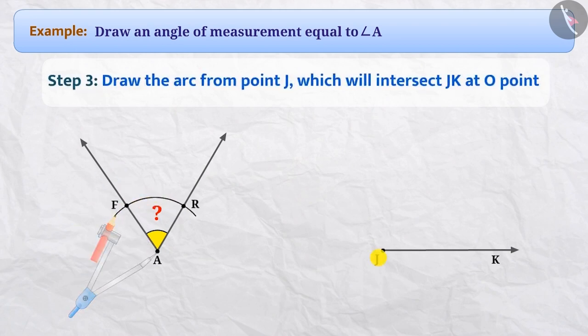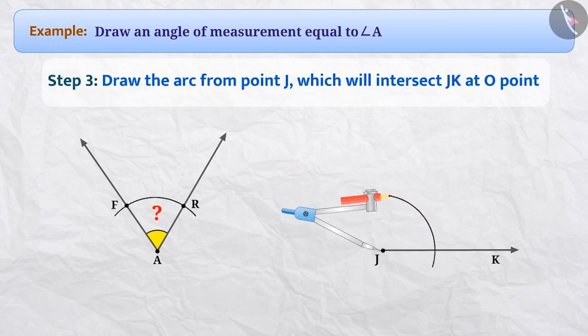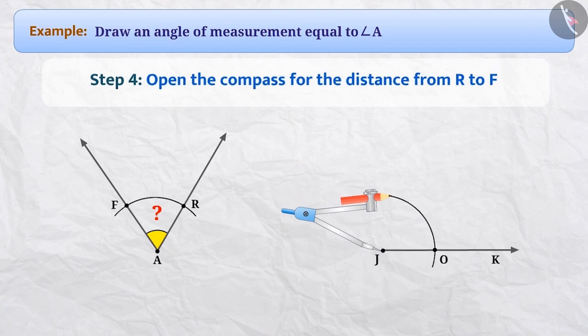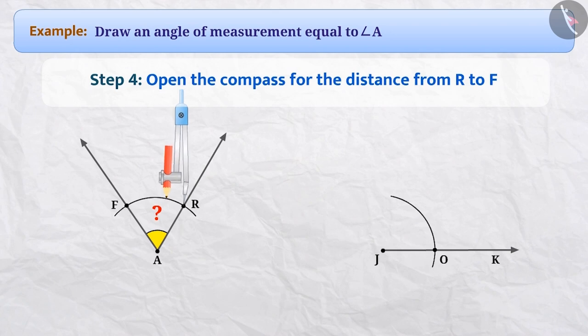Step 3: Now we will take the point J at the top and place the pointed end of the compass on J, and draw an arc without changing the distance, which will intersect JK at point O. Step 4: Now we will place the pointed end of the compass at point R and open the compass for the distance from R to F.